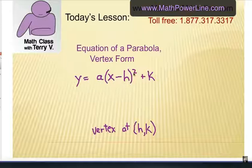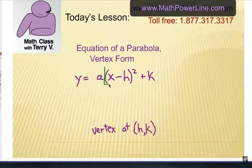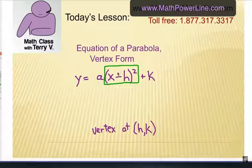And x minus h quantity squared. This part right here is the result of being able to complete the square. Because if you can create a perfect square trinomial, you can write it in factored form like this. That's the goal right there. Because this vertex form of a parabola involves a squared x group like that, you have to be able to complete the square.